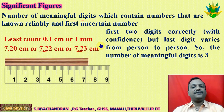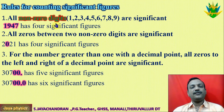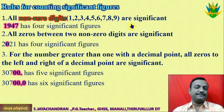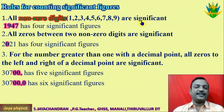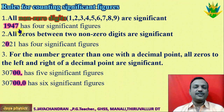Now I will tell you the rules for significant figures. The first rule: all non-zero digits are significant. All non-zero digits are meaningful. For example, take 1947 — all non-zero digits are meaningful. How many digits are there? One, two, three, four. So the significant figure is four.